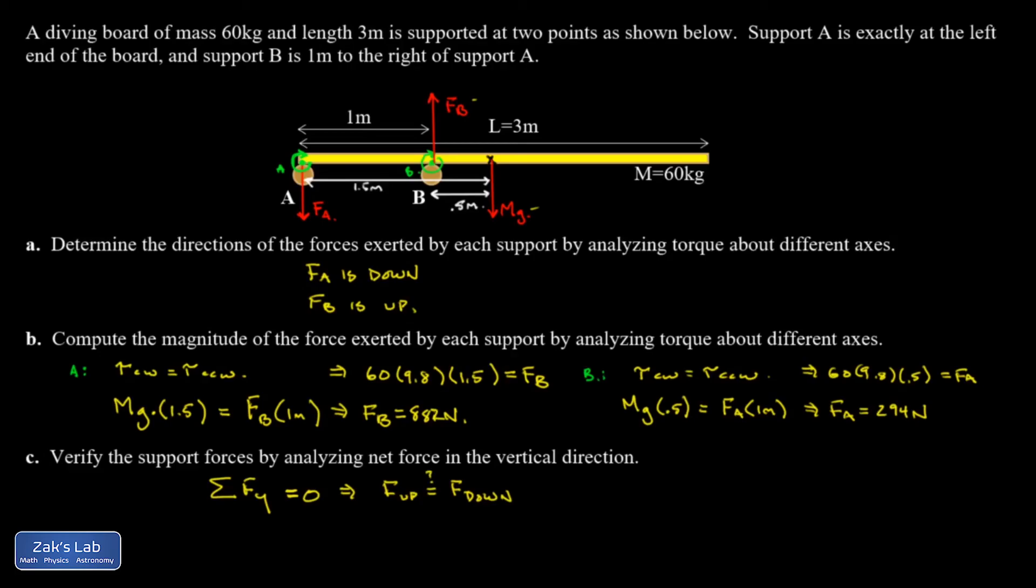So let's look at our upward forces. There's only one of them. It's FB. And that's 882 newtons. Let's look at our downward forces. There's two of them. FA is pulling down with 294 newtons. And MG is pulling down. Gravity is pulling down on the center of mass. And when I compute that total downward force, I get 882 newtons. So we've verified that the net force comes out to zero.